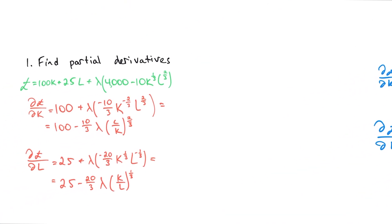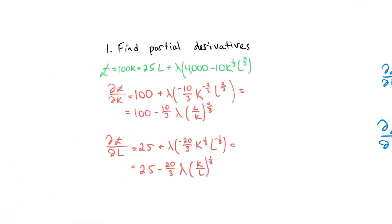So let's get to step number one. It's pretty simple, just the partial derivatives. We have the Lagrangian again as you see here, and we take two partial derivatives: the first one with respect to capital and the second with respect to labor. We set them both equal to zero.